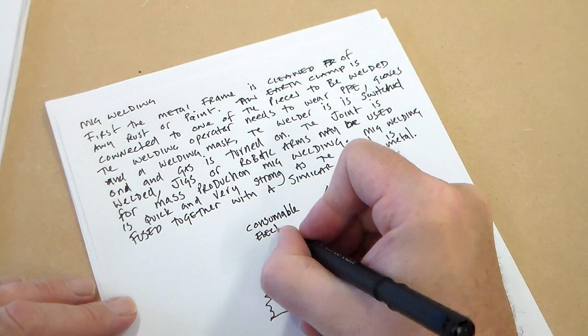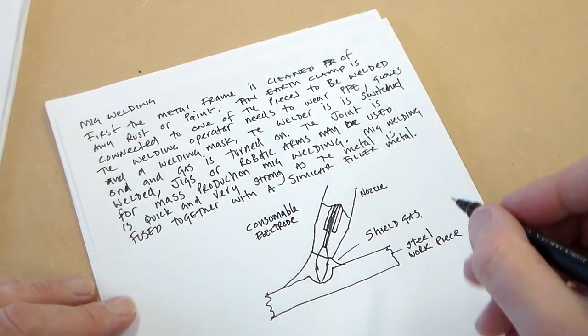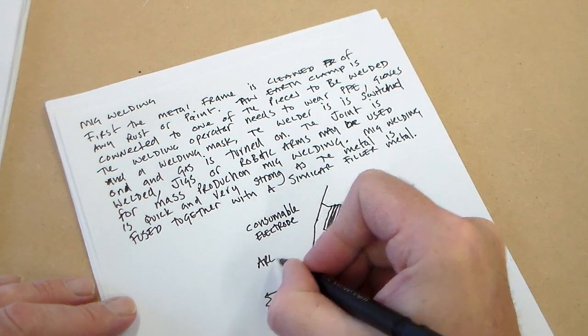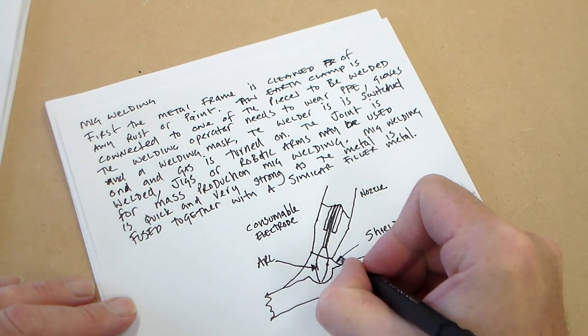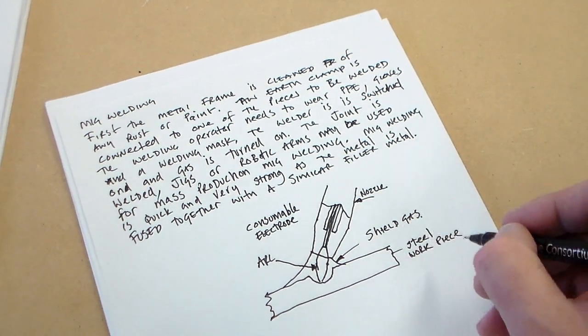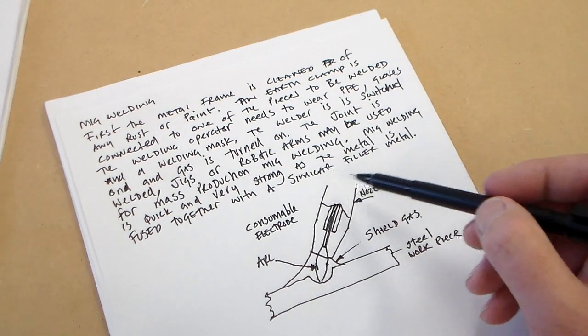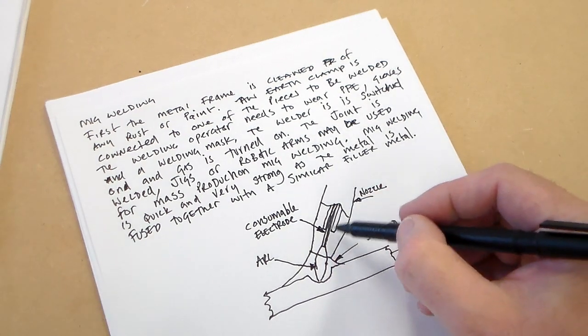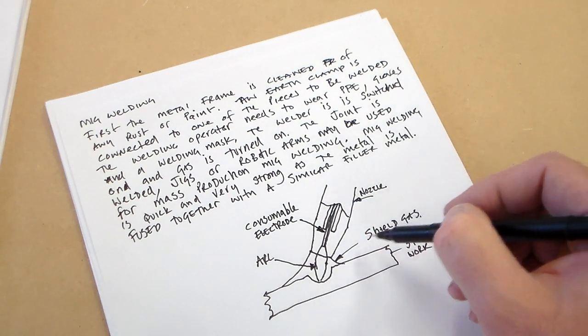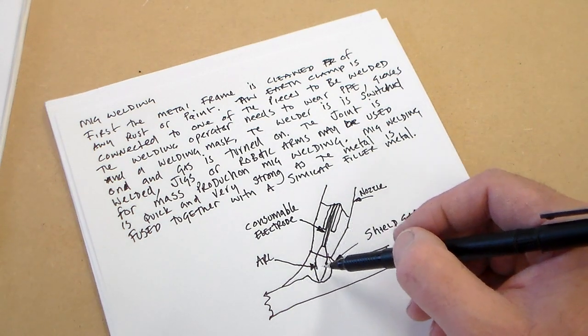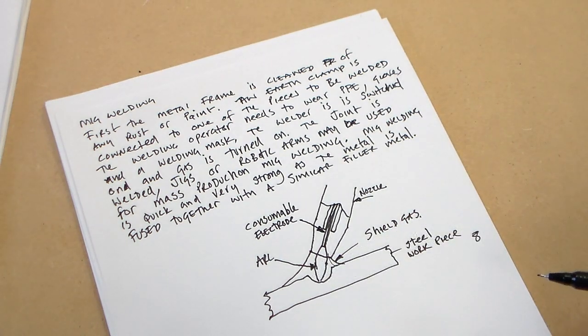So we've got, oh and of course not to forget the arc. We've got arc here, shield gas here, nozzle here. I think that would probably do. We've drawn the consumable electrode which is fed through the nozzle. This is kind of sectioned out. The shield gas here, the gas actually shields and keeps the oxygen out of the weld. The arc is fed into here and there's a workpiece. So there we've got MIG welding and that's eight marks.